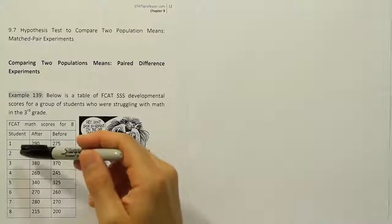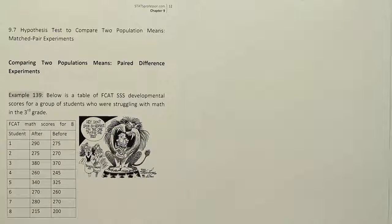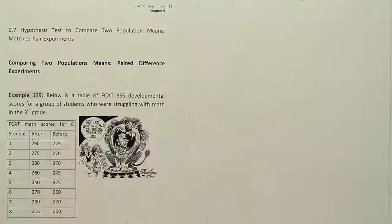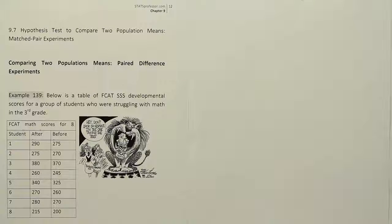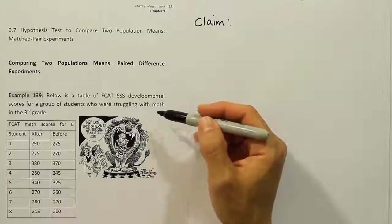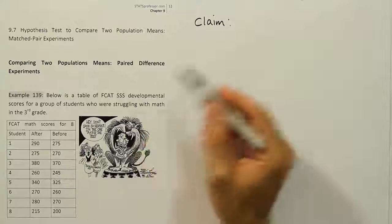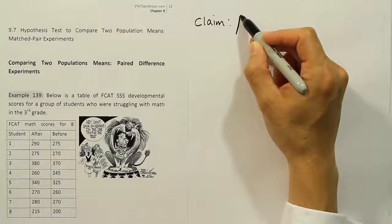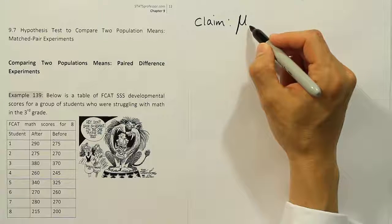To do that, we're going to start with the claim. Below is the table of FCAT developmental scores for a group of students struggling with math in the third grade, and we want to test the claim that there is an improvement over time due to the test prep. To express that claim, we need to talk about differences. We're going to have two means to look at: the mean before and the mean after.